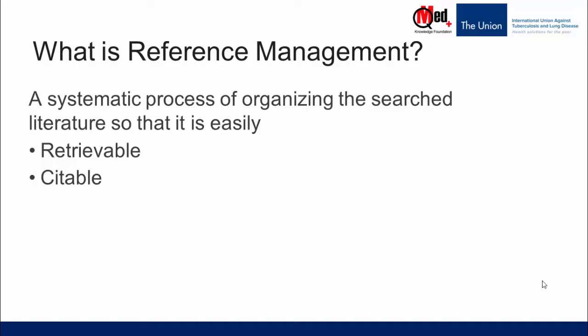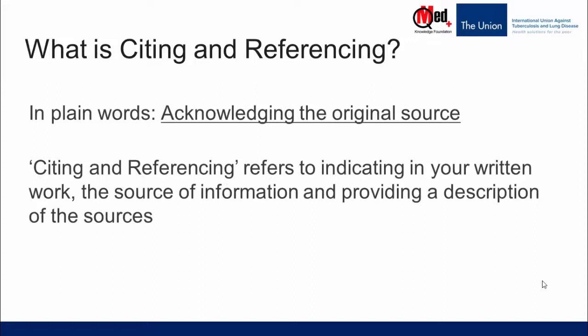What is reference management? It's nothing but a systematic process of organizing the searched literature so that it's easily retrievable and citable. The first step in any research is a review of literature. This is essential to understand what has been done before and identify the knowledge gaps, so that the research we undertake addresses those gaps and is not mere duplication. We often spend a lot of time searching for published literature, but once we've done the hard work, it's important to store it in an organized manner so we may retrieve and cite it easily. Otherwise, we'll just be wasting time searching for the same thing again and again. This systematic process is called reference management.